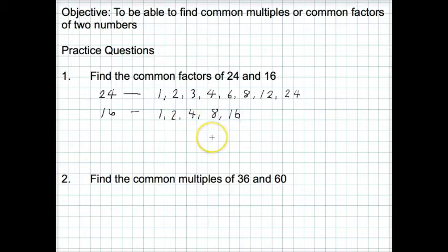So now I need to look at which ones are in common. Well, 1 is clearly in both, 2 is in both, and so is 4, but we've also got 8 in both as well. So our common factors of 24 and 16 are 1, 2, 4 and 8.